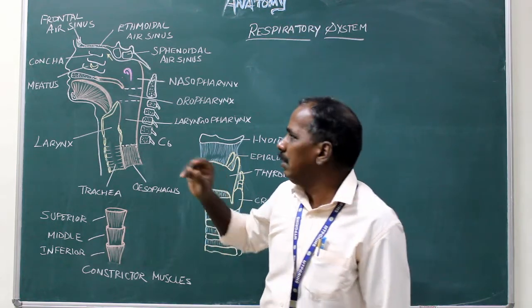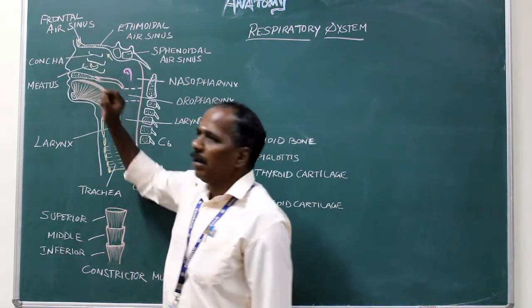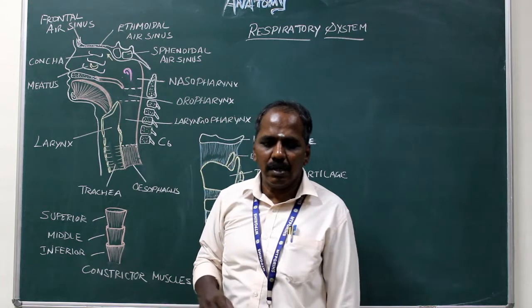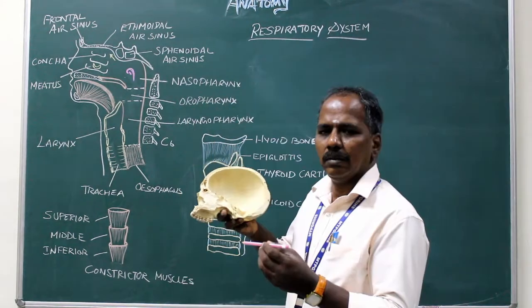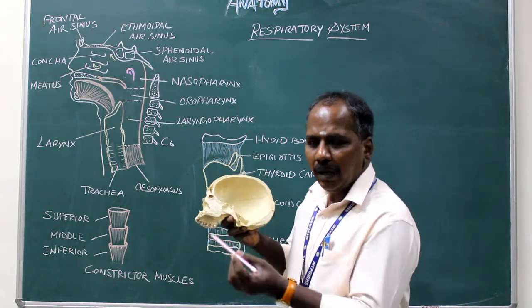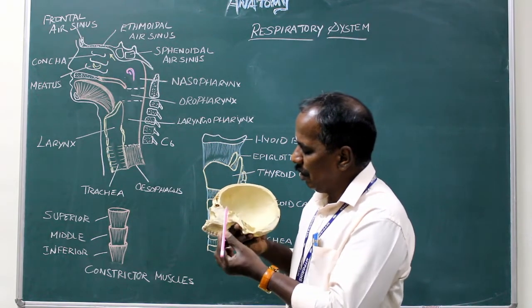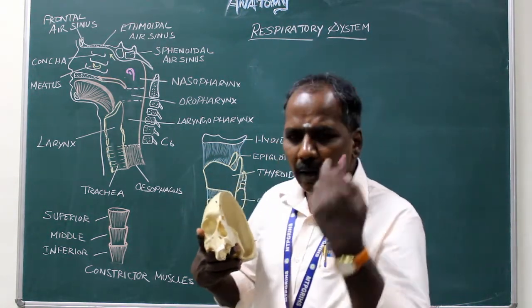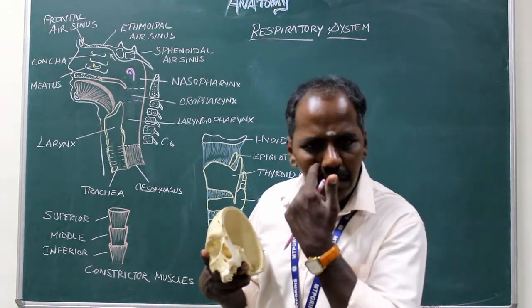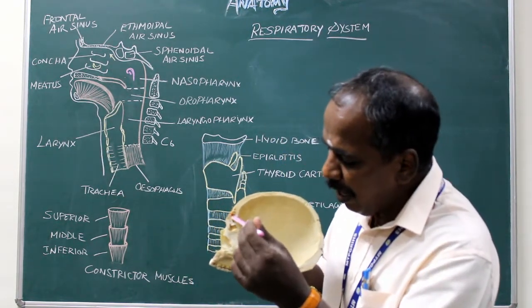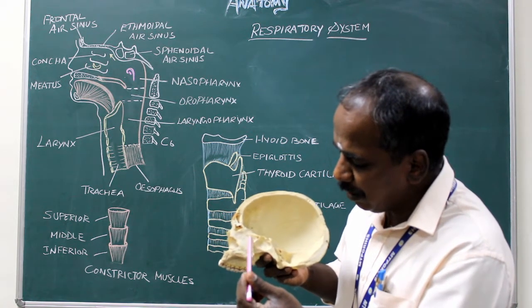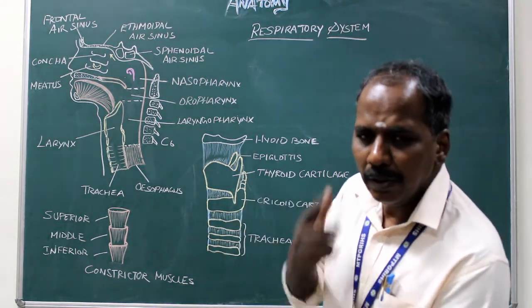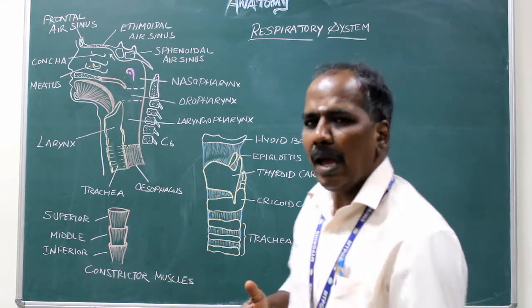The paranasal air sinuses are: 1. Frontal air sinus, 2. Ethmoidal air sinus, 3. Sphenoidal air sinus, and 4. Maxillary air sinus.